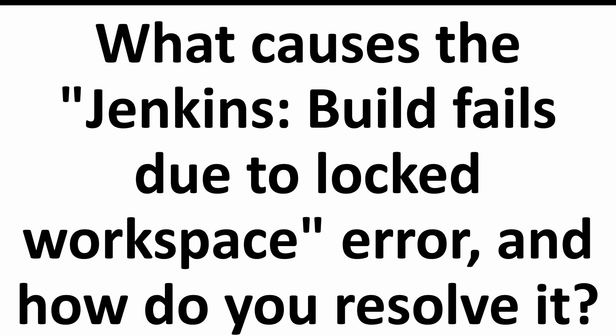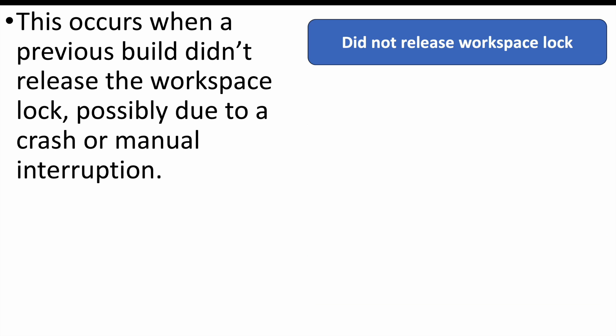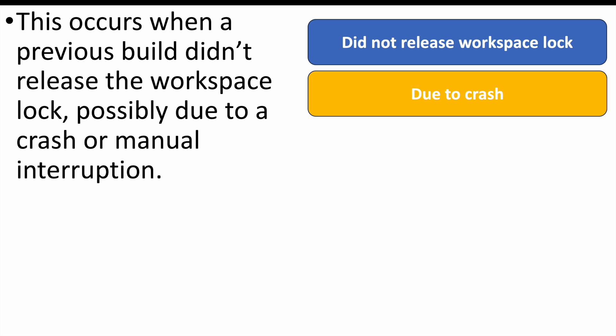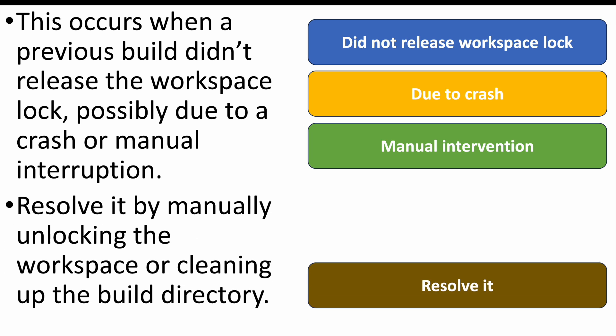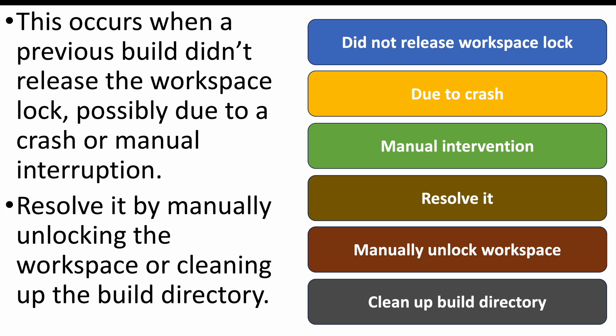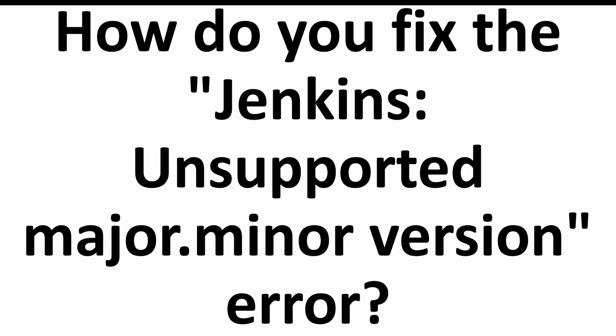The next question: what causes the 'Jenkins build fails due to locked workspace' error and how do you resolve it? This error occurs when a previous build did not release the workspace lock — perhaps it crashed or was manually stopped. To resolve it, manually unlock the workspace or clean up the build directory so Jenkins can use that workspace to store job-related information.